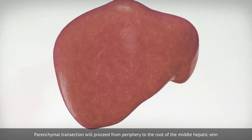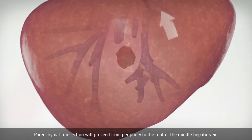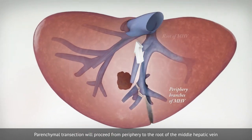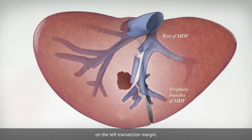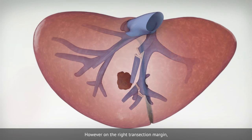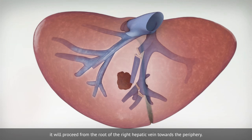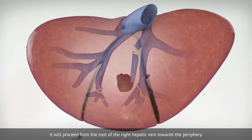The parenchymal transection will proceed from periphery to the root of the middle hepatic vein on the left transection margin. However, on the right transection margin, it will proceed from the root of the right hepatic vein towards the periphery.